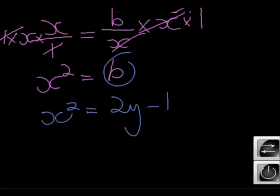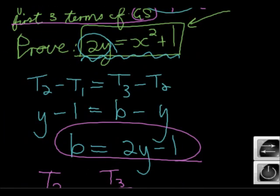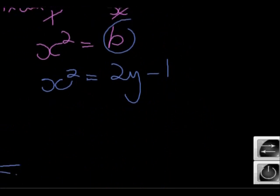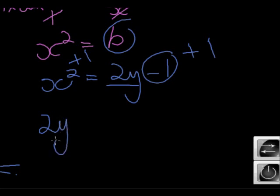Now they just want it a little bit different. They want it to be 2y is equal to x squared plus 1, which means they just want this negative one on the other side. So I get rid of it with a plus 1 on both sides. So on this side I've got 2y. Let's just write it on the left. 2y is equal to x squared plus 1.